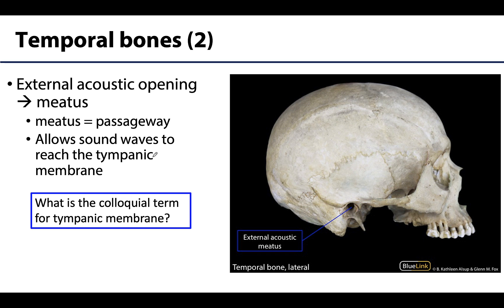This large hole in the side of the head is the external acoustic meatus — more precisely what we're looking at is the external acoustic opening leading into the meatus. Meatus means passageway or tunnel. The cartilage and structures of the ear sit superficial to this opening, and this tunnel allows sound waves to reach the tympanic membrane. The tympanic membrane — colloquially known as the eardrum.